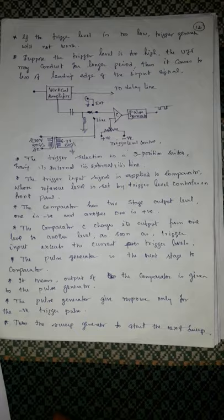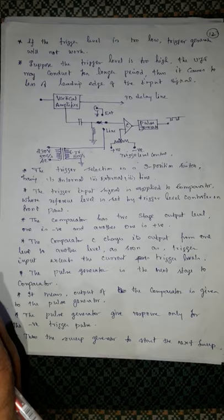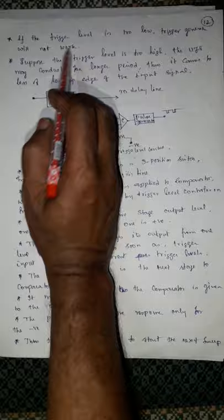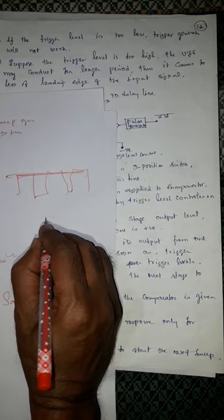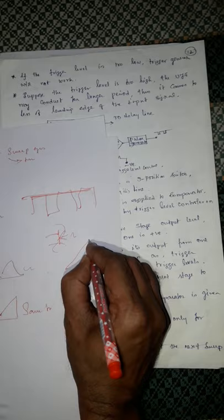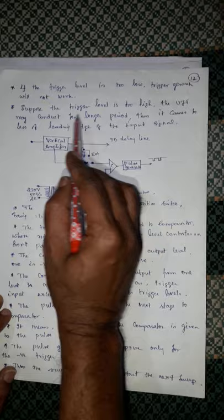If the trigger level is too low, the trigger generator will not work — it is not able to handle the UJT properly. If the trigger level is too high, the UJT may conduct for a longer period. For example, if the trigger pulse is too low, it can't switch on the UJT. If it is too high, the UJT will be continuously switched on, so the return-to-zero level will be prolonged, causing a less distinct leading edge of the input signal.